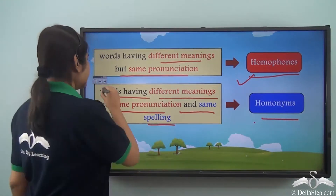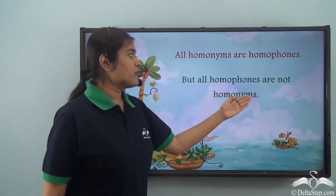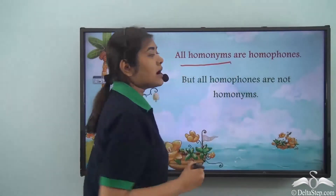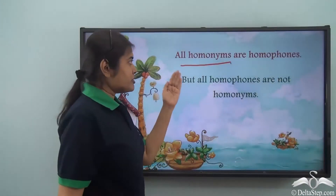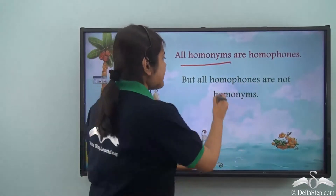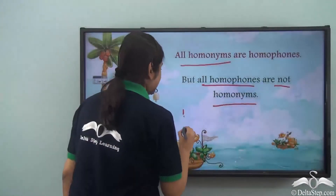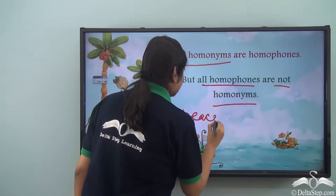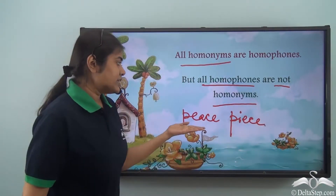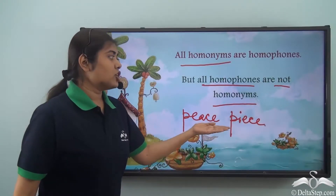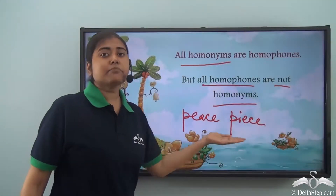So what we can conclude from here is: all homonyms are homophones, but all homophones are not homonyms. All homonyms are necessarily homophones because for homonyms the words need to be of the same sound, which means they are homophones as well. But all homophones are not necessarily homonyms — because as you have seen in words like 'peace' and 'piece', these are homophones but not homonyms because they do not have the same spelling. They only have the same sound.